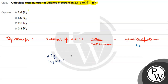First, we will calculate the number of atoms. We take the number of atoms as x, divide by Avogadro's number. The grams cancel out, giving us 0.2. So the number of atoms is 0.2 into Avogadro's number.